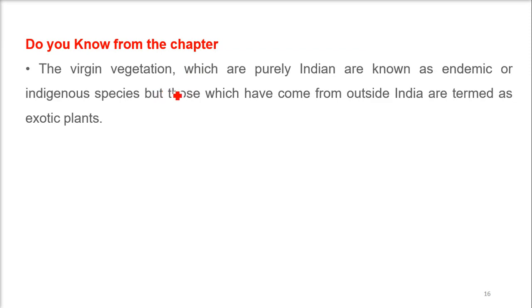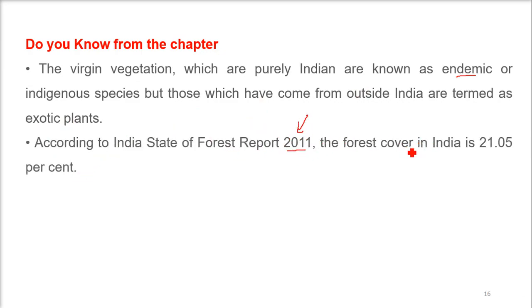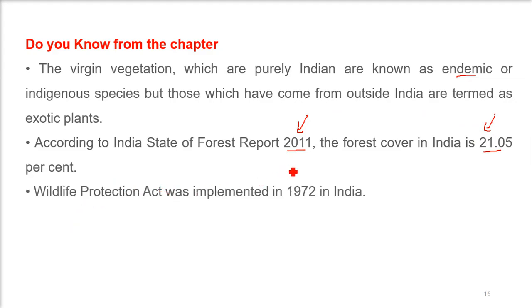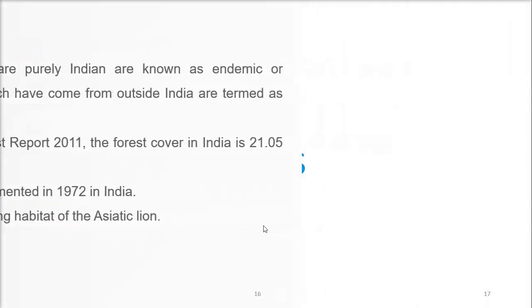In summary: virgin vegetation refers to purely Indian endemic or indigenous species, while plants that have come from outside India are known as exotic plants. According to the Indian State of Forest Report 2011, forest cover in India is only 21.05%, which is alarming. The Wildlife Protection Act was implemented in 1972, and the Gir Forest is the last remaining habitat of the Asiatic lion.